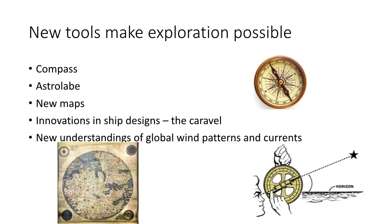The new tools that made exploration possible included the compass to help figure out where you're going, and the astrolabe, which you can see pictured here. There were also new maps being drawn based on new discoveries and innovations in ship design. The caravel had been around for a while - there are debates on whether it was created in Rome or by Islamic empires - but improvements were made so it was easier and better to sail. You also have new understandings of global wind patterns and currents.